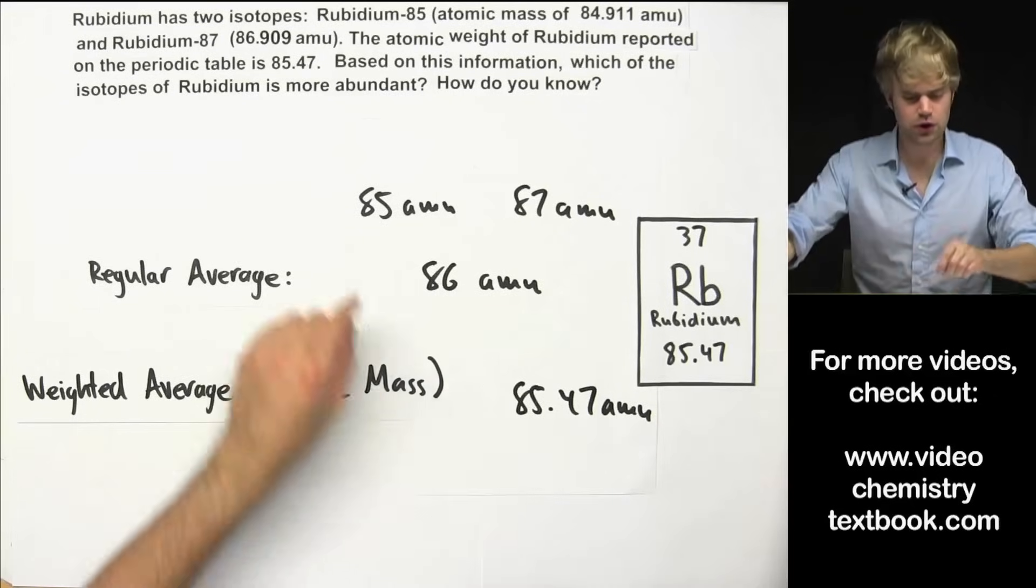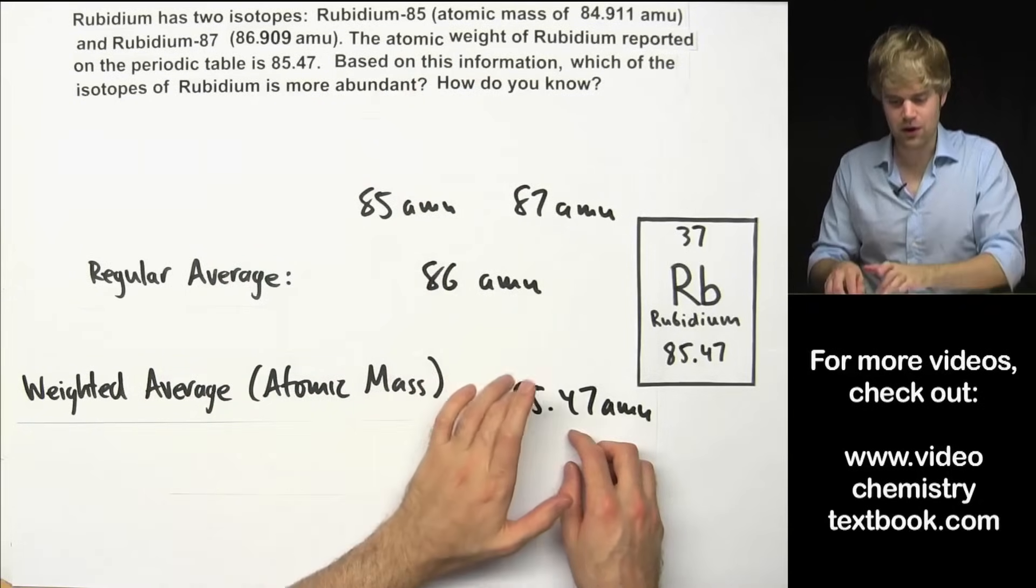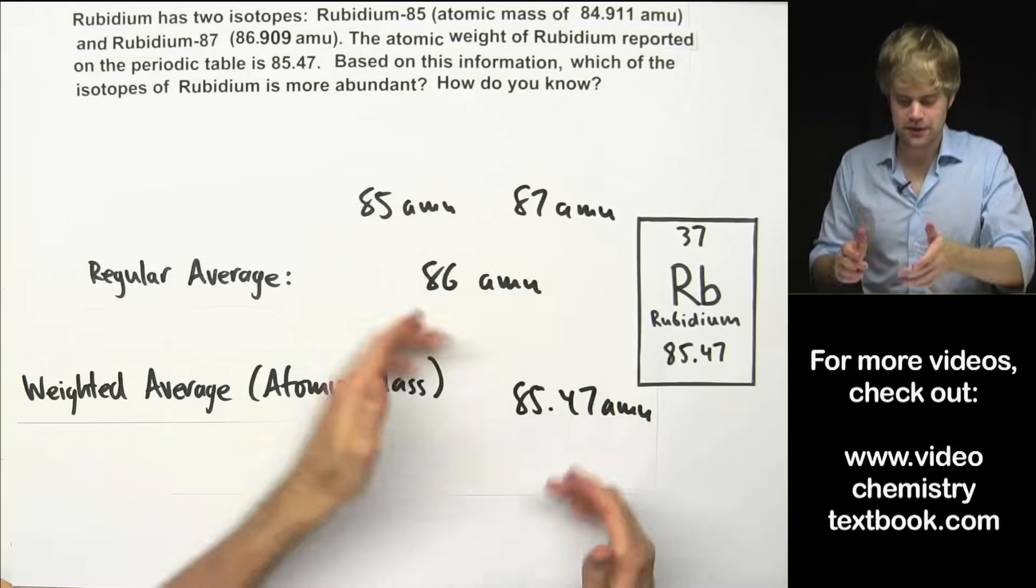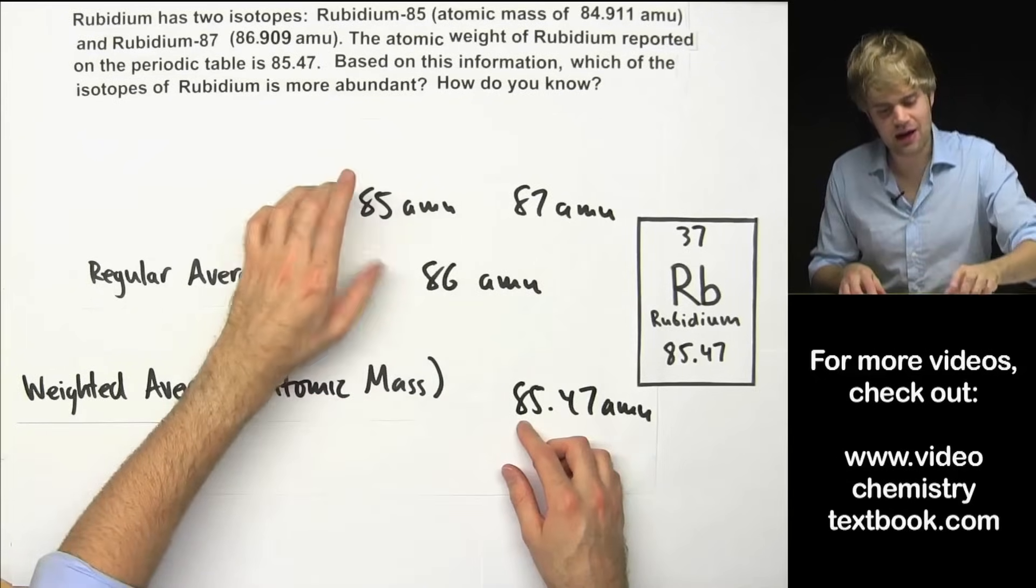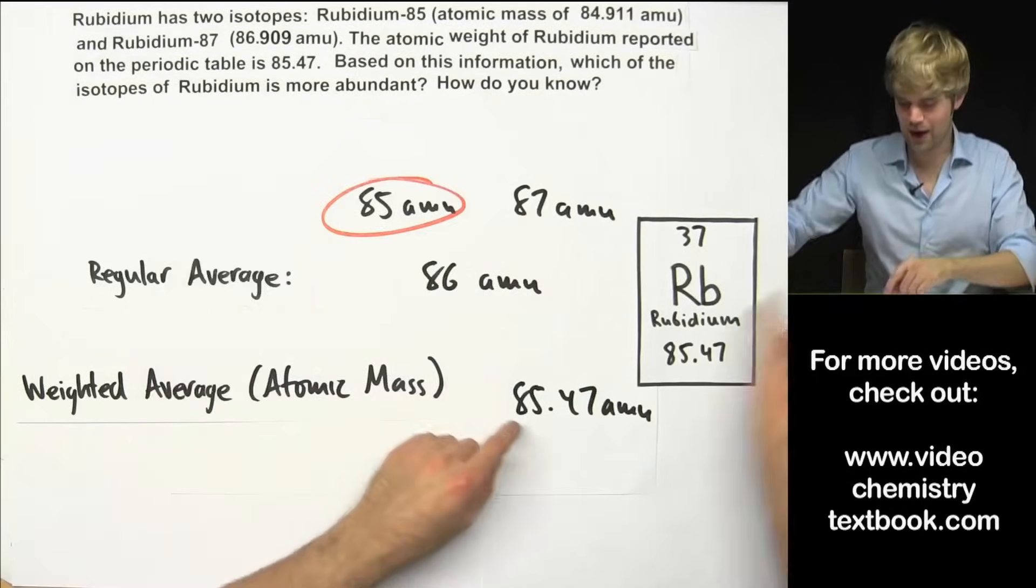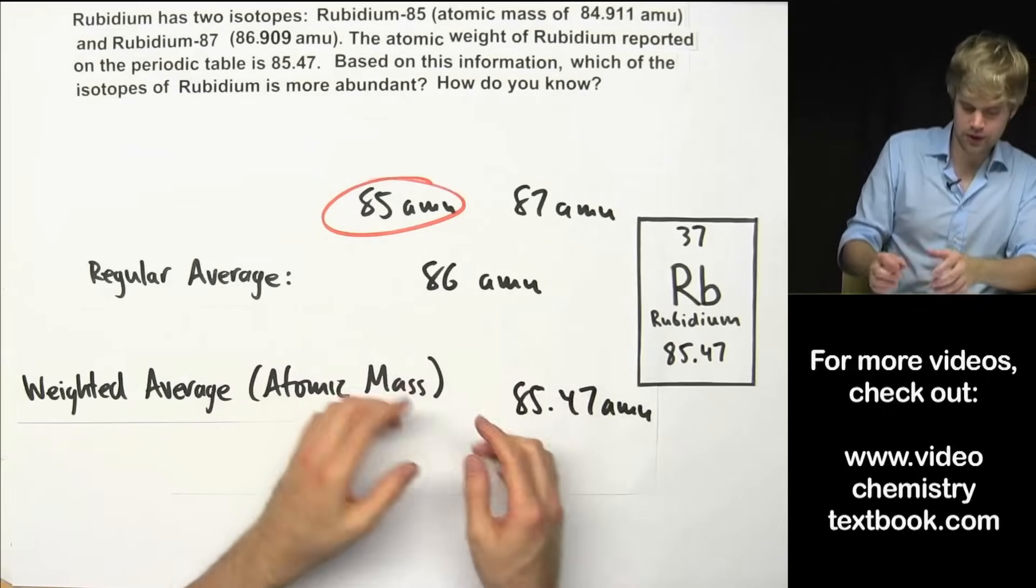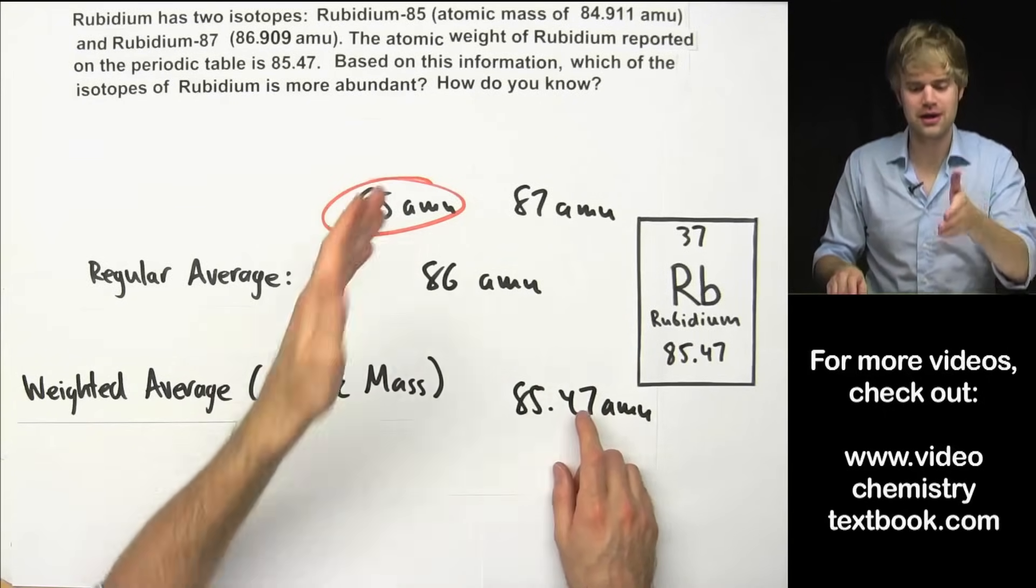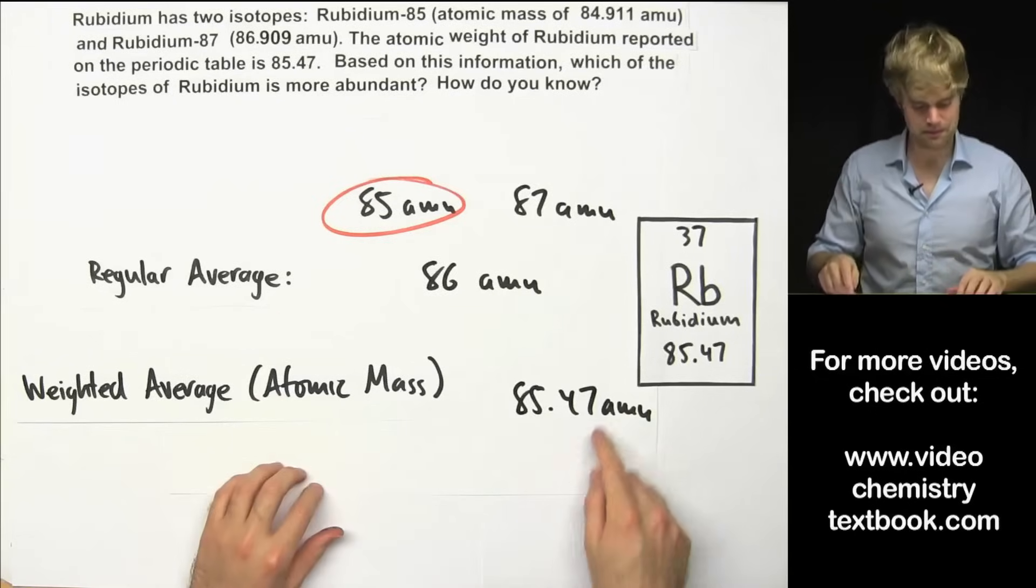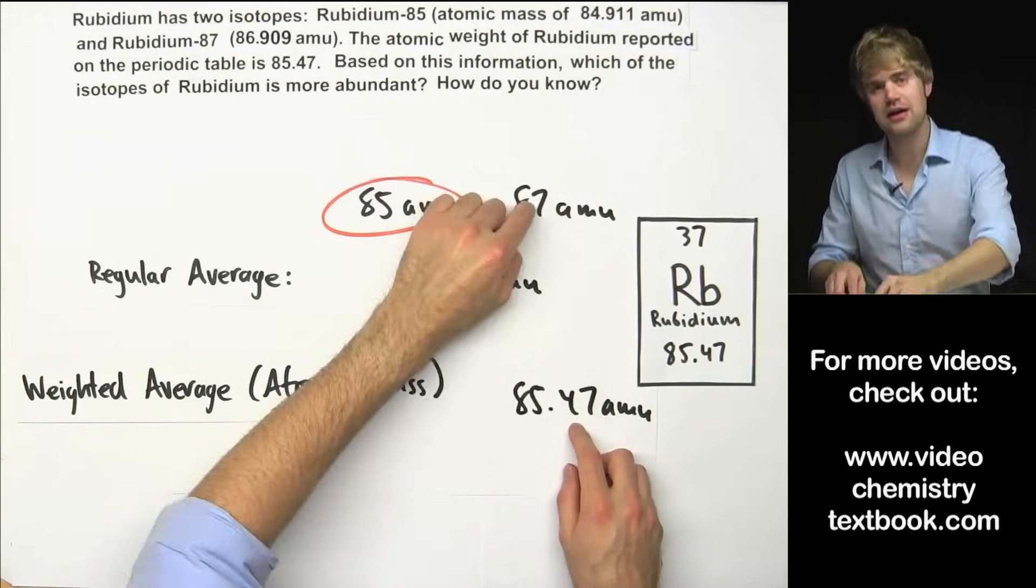This means that it's closer to the mass of rubidium-85. It's not in the middle and it's not close to 87. So that means that the weighted average is telling us that we have more rubidium-85 because this weighted average number is closer to this. So there's more of this that's pulling the weighted average number down. So rubidium-85 is more abundant because the atomic mass weighted average is closer to that than it is to this.